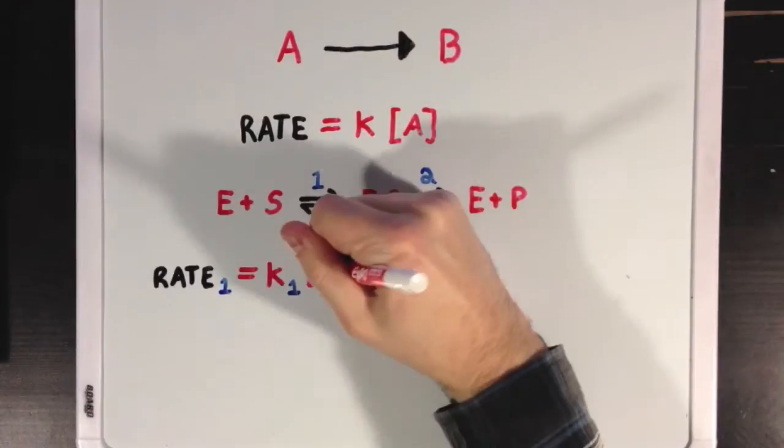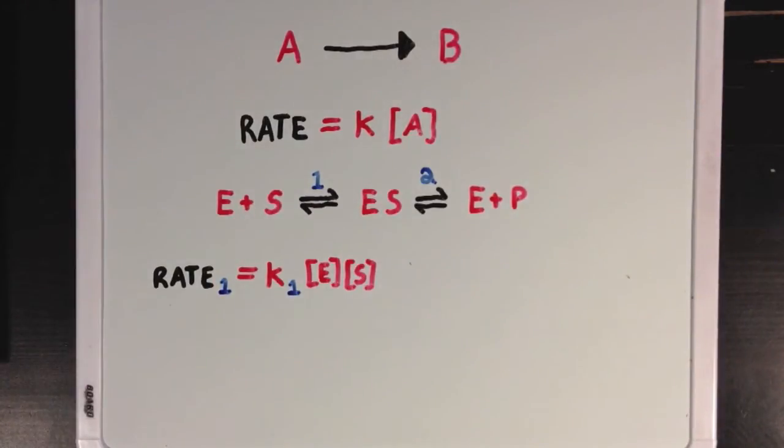Rate 1 would be equal to rate constant K₁ times the two starting material concentrations, E and S, while rate 2 would be equal to K₂ times the concentration of one starting material, ES. Notice that reaction 1 has two reactants, E and S, while reaction 2 only has one, which is the ES complex.